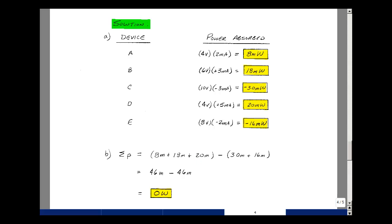and 20 milliwatts. The negative terms are minus 30 milliwatts and minus 16. Adding the positive terms gives 46 milliwatts, and the negative terms also give 46 milliwatts, so the sum equals zero.